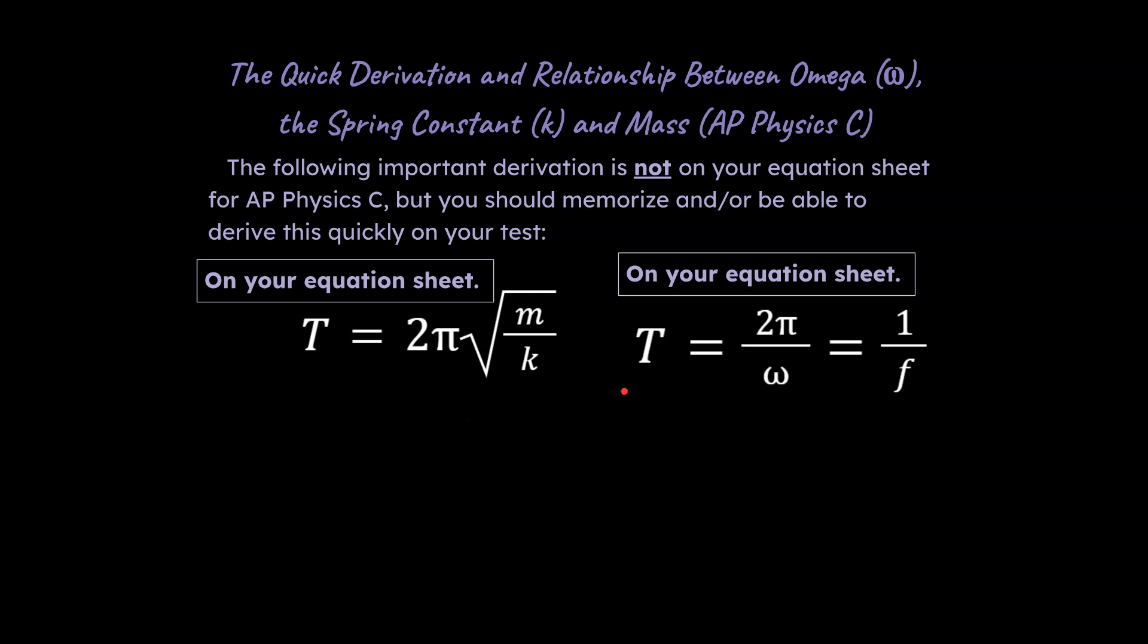So what we're going to do is take these two equations and just set them equal to each other, and if we do that, then we end up with this equation right here, and notice we have 2π on both sides of the equation, so we can go ahead and cancel that out,